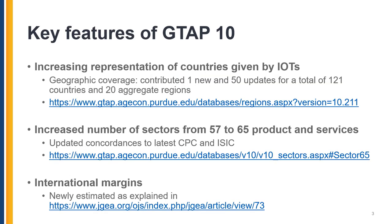Some of the key features of GTAP10 are the increased representation of countries and the increased number of sectors that the GTAP database represents. In terms of countries, we've added one new country to our geographic coverage and updated 50 countries for a total of 121 countries plus 20 aggregate regions to encompass the whole world. And in terms of sectors, we increased from 57 to 65 products and services.